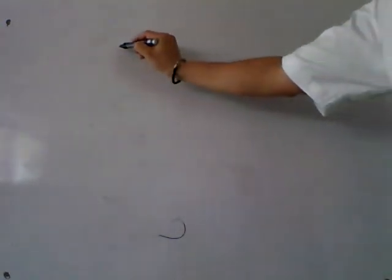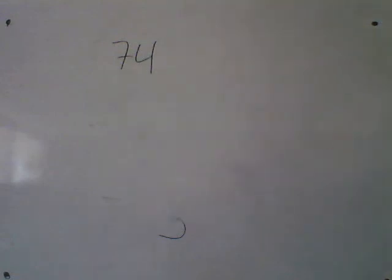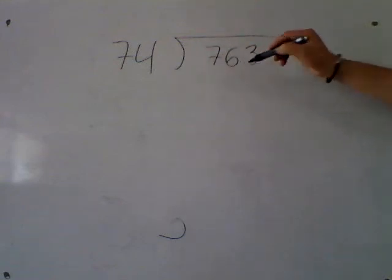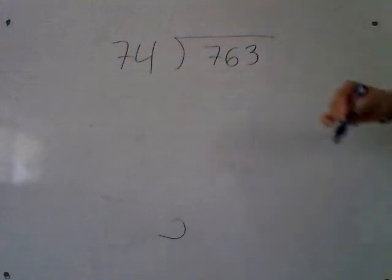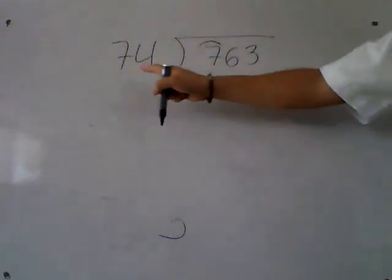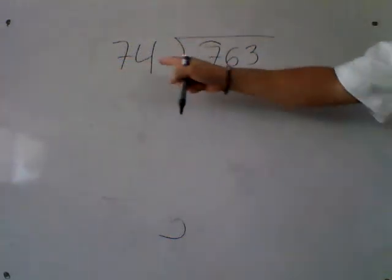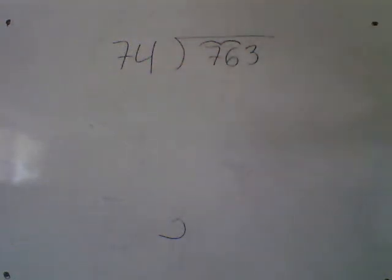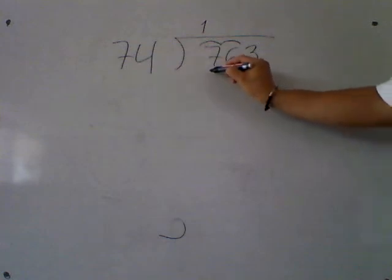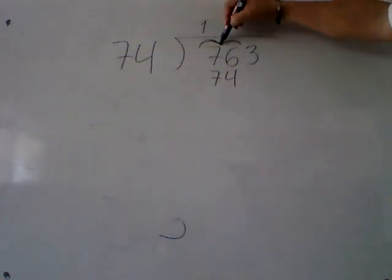Let's go with example number 3. It's 763 divided by 74. I take the first digit: does 74 fit in 7? No, because 74 is bigger than 7. So I continue with the next one: does 74 fit in 76? Yes. How many times? One. Next — multiplication: 1 times 74 is 74. Write the answer below 76.